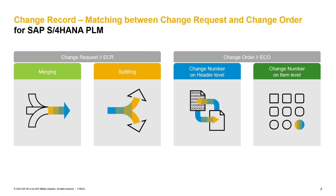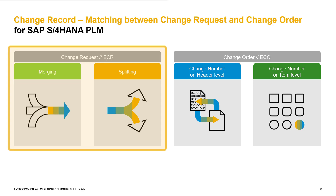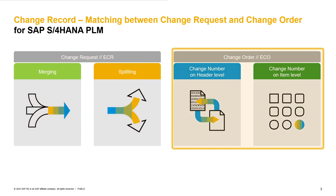In general, we are separating the change process into two phases: ECR (engineering change request) and ECO (engineering change order). The ECR phase is like the change planning part. During ECR, no change number will be available on the change record. When converting an ECR into an ECO, we are switching from a planning to a change execution phase. This is also the point when a change number will be generated and available on the change record header, which will then be used to execute the product changes.